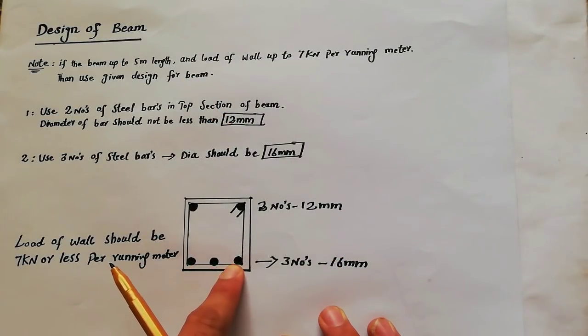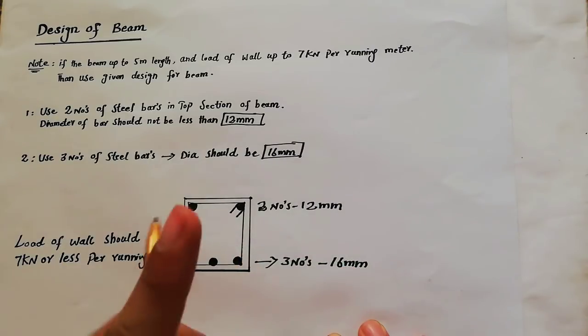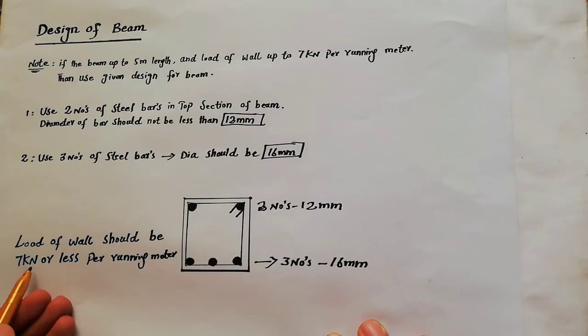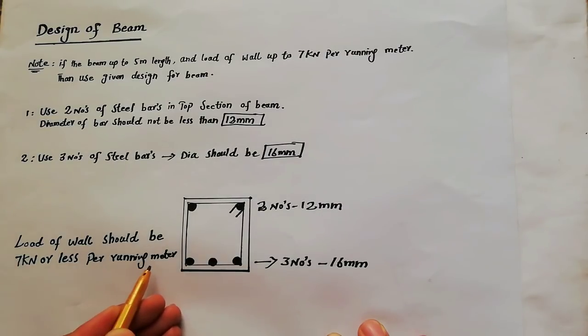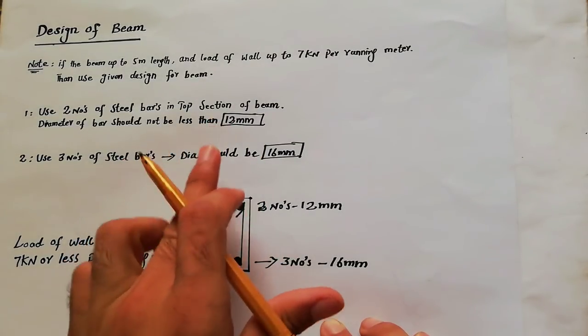But note: load of the wall should be 7 kilonewton or less than 7 kilonewton per running meter, then you can safely do this design for your beam.